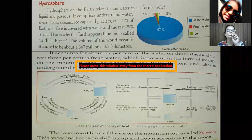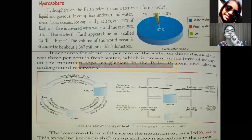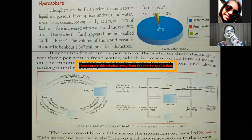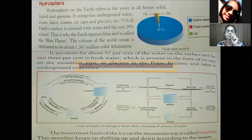The volume of the world's ocean is estimated to be 1.367 million cubic kilometers. It accounts for about 97% of the water on the surface, and the rest 3% is fresh water, which is present in the form of ice on mountain tops as glaciers, in polar regions, and in lakes and underground reservoirs. The lowest limit of the ice on the mountain top is called the snow line, and this snow line keeps on shifting up and down according to the seasons.